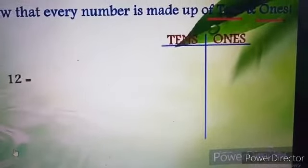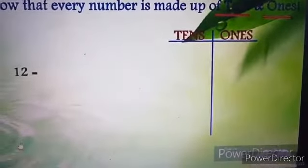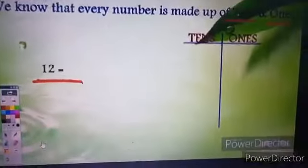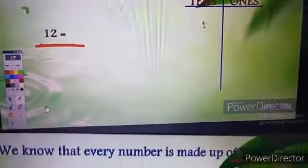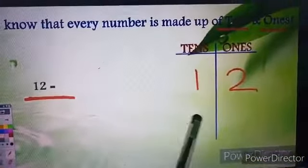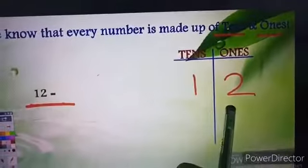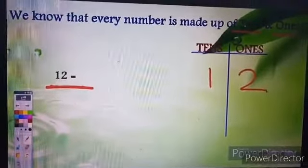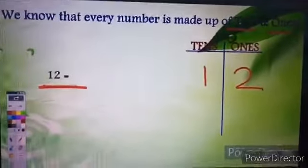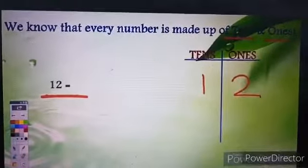And how can we do that? So if I have a number 12, I can write it as 1 in a tens place and 2 in ones place. Yes or we can say that tens and ones are like rooms.